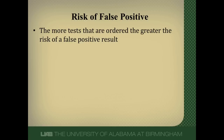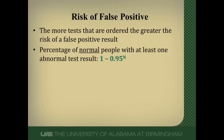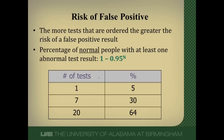The more tests you order, the greater the chance of a false positive result. The percentage of normal people with at least one abnormal test can be expressed by the formula 1 minus 0.95 raised to the n, where n is the number of tests you do. If you do one test, there's a 5% chance it's falsely positive — this relates to the p-value of 0.05. But if you run 20 tests, there's a two-thirds chance that at least one will be falsely positive. Keep that in mind: the more tests you do, the greater the chance you'll find something falsely positive.